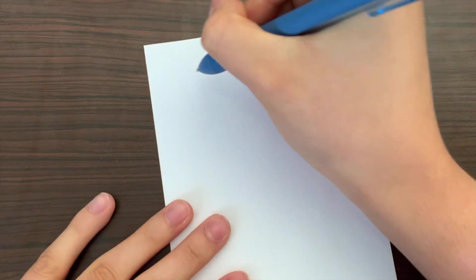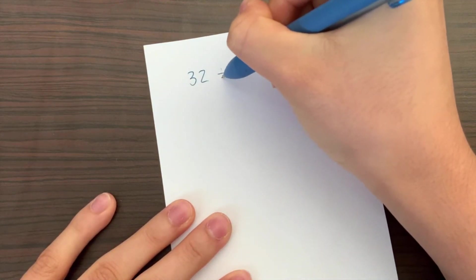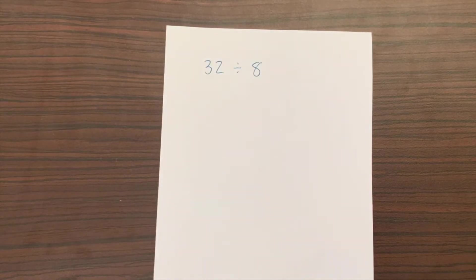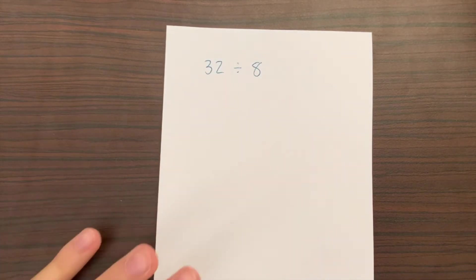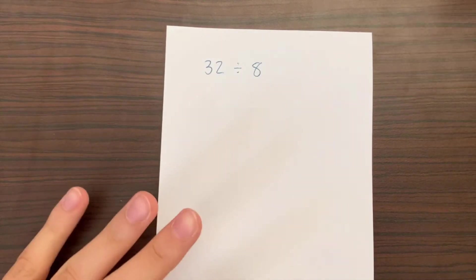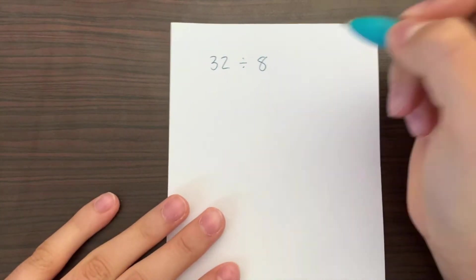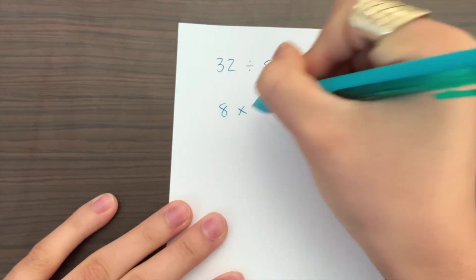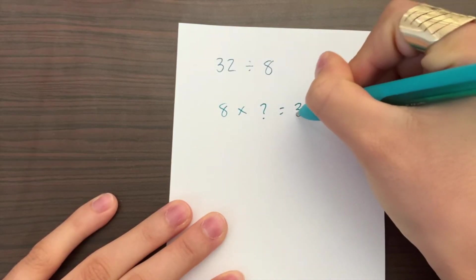So when it comes to connecting multiplication and division, it gets really simple. If you prefer multiplying over dividing, then we can choose which one we want to work with. For example, here we have 32 divided by 8. So let's say you just don't like dividing and you prefer multiplying. Well, then more power to you. So what we're going to do when we have a problem like this and you don't want to divide, we're going to do 8 times what equals 32.